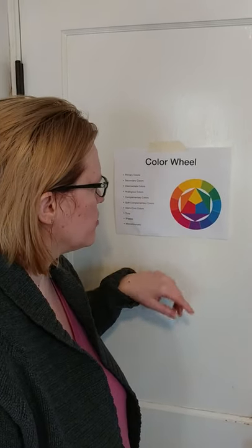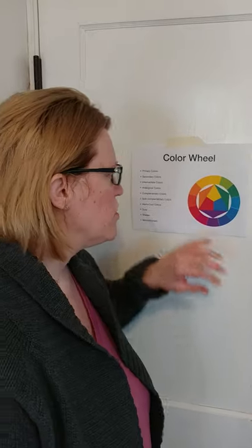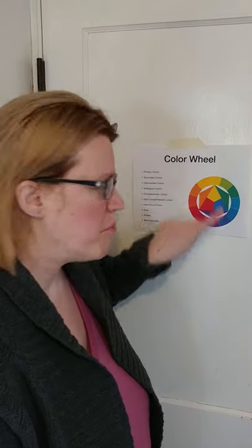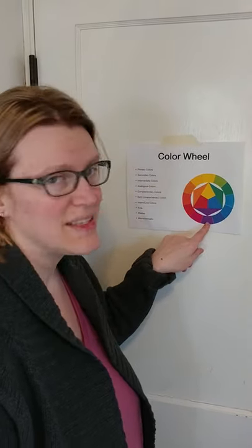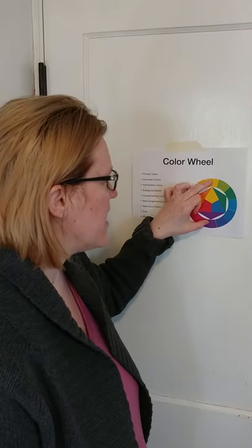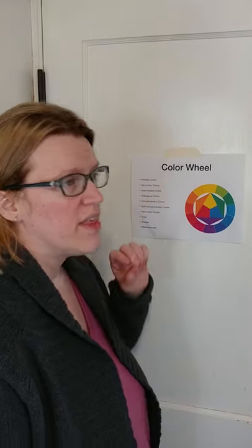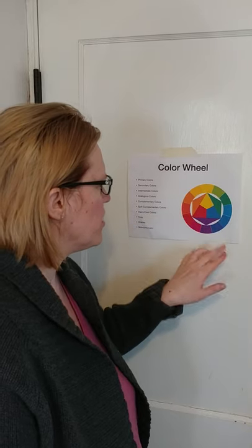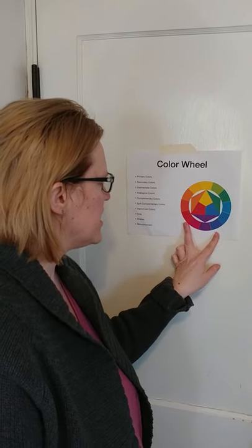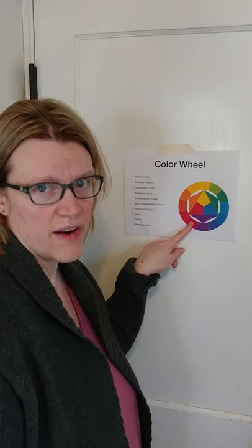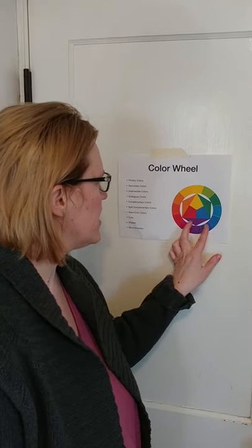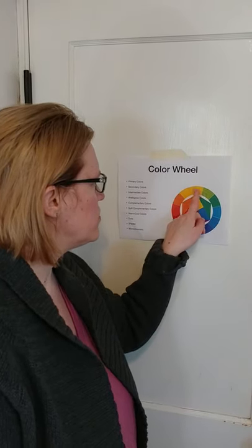Your complementary colors are opposites. Because we always start with yellow at the top, purple has to be at the bottom because they are complementary. A split complementary is when we start with yellow and then split at the bottom to a red violet and a blue violet color. That is the split to the yellow.